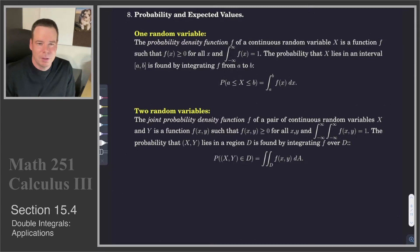We're now going to look at an application of multiple integrals to probability. Just to start things off, let's think about one random variable. The probability density function f of a continuous random variable X is a function f such that it's positive and its integral over the entire real line is 1.